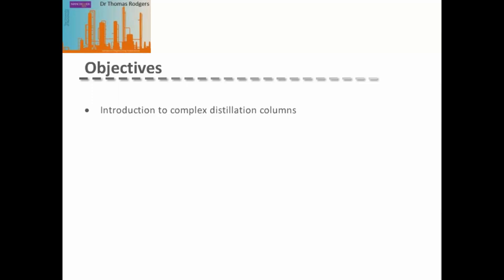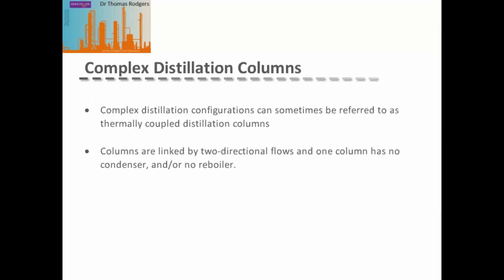This video provides a brief introduction to the different types of complex distillation columns. Complex distillation columns are sometimes referred to as thermally coupled distillation columns because streams pass between two columns without there being a reboiler or a condenser between them. The columns are linked by these two-directional flows, allowing us to remove the condenser or reboiler from one of the columns, saving energy by not having to perform that extra energy transfer in our sequence.